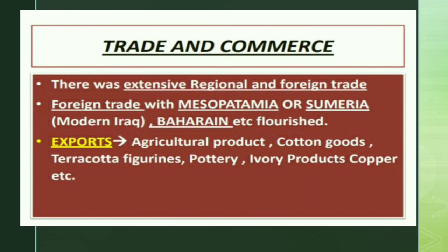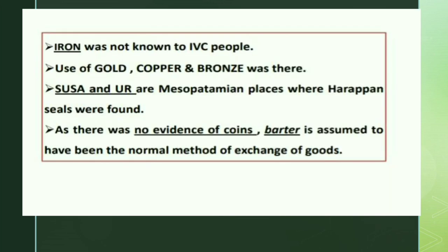There was extensive regional and foreign trade. Foreign trade with Mesopotamia and Sumeria — modern Iran — flourished at that time. Exports included agricultural products, cotton goods, terracotta figures, pottery, ivory products, and copper. Iron was not known to the Indus Valley people; gold, copper, and bronze were used. Susa and Ur are Mesopotamian places where Harappan seals were found. Since there was no evidence of coins, the barter system was the normal method of exchange.